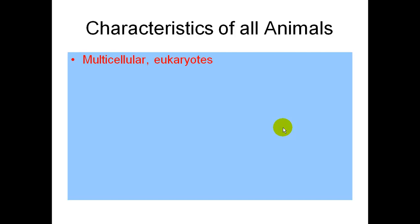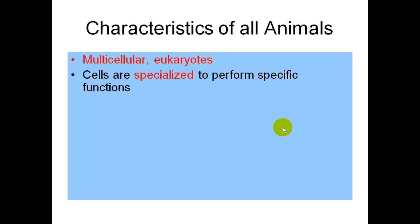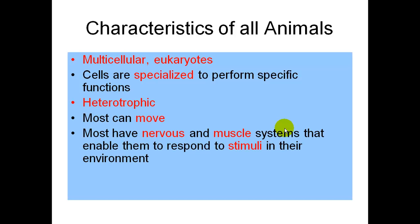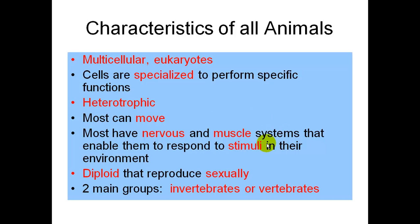All animals are multicellular eukaryotes. We have cells that are specialized to perform specific functions. Heterotrophic. Most can move, with a couple exceptions. Most have nervous and muscle systems that enable them to respond to stimuli. We are diploid organisms that reproduce sexually. There are two main groups — we're covering invertebrates first and then eventually we'll get to vertebrates.